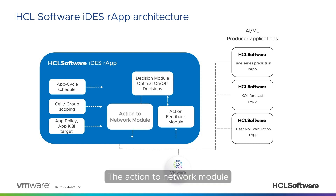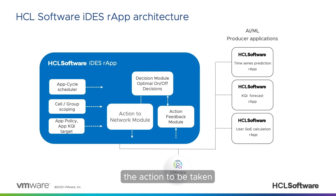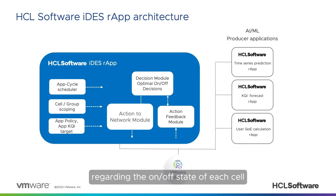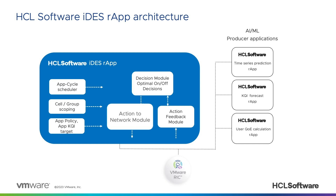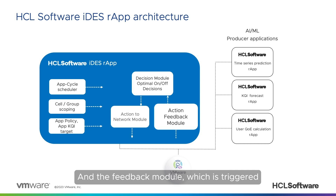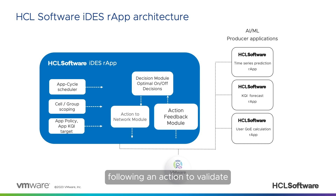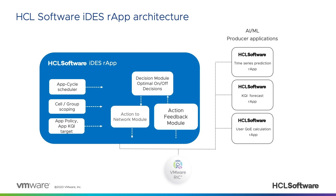The action-to-network module conveys to the network the action to be taken regarding the on-off state of each cell. And the feedback module, which is triggered following an action, validates that it has a positive effect on the network.